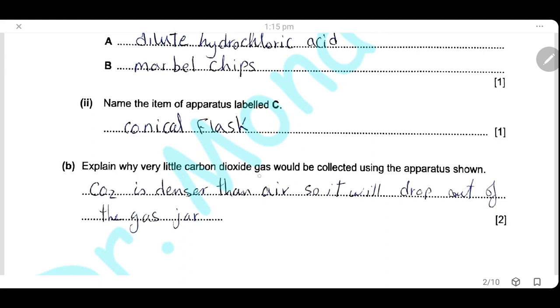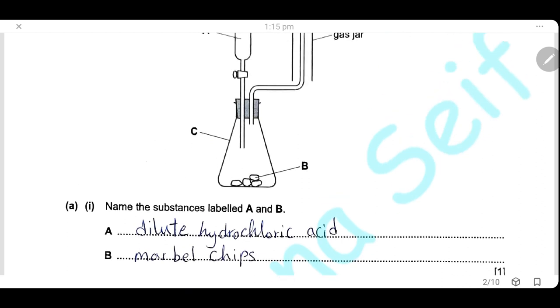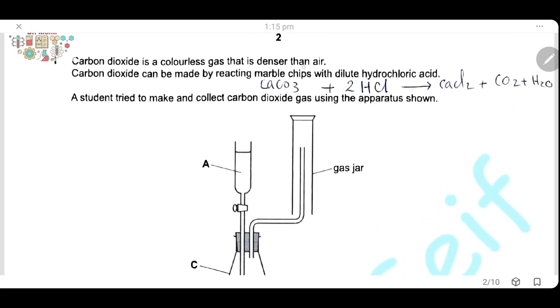Explain why very little carbon dioxide gas would be collected using the apparatus shown. He mentioned here that carbon dioxide is denser than air, so it cannot be collected by this way because it will drop out of the jar.